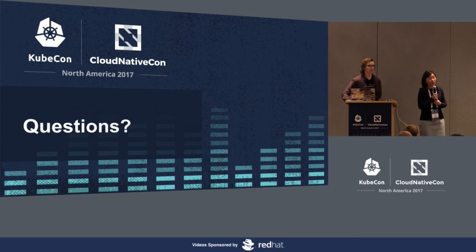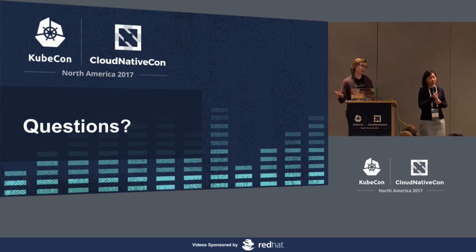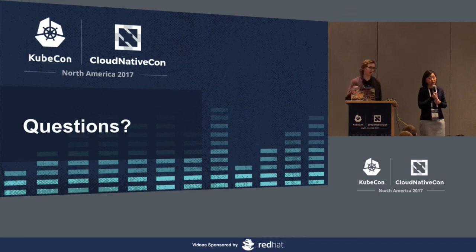Question: is there a Java version? OPA is written in Go and you can embed it into your Go services. If you're using Java or any other language, you can run it as a sidecar — it has a REST API you can use to ask policy questions.